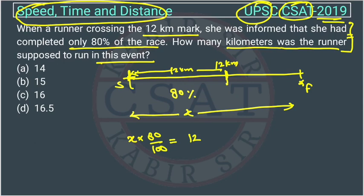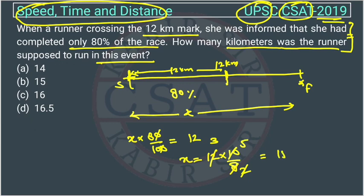So x would be 12 divided by 0.8, which is 12 multiplied by 10 over 8. Simplifying, we get 120 over 8, and dividing both by 8, we get 15. So x equals 15.